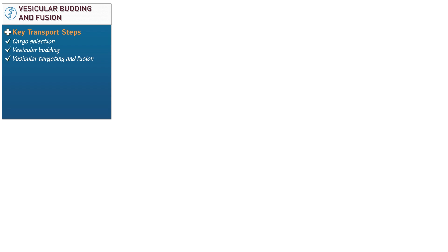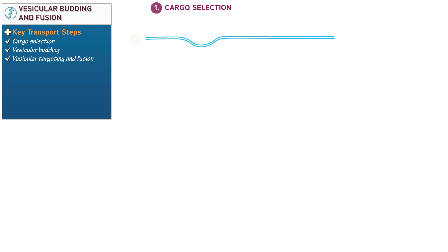We'll illustrate the specialized proteins and receptors that facilitate these steps. To begin, let's illustrate step 1, cargo selection. First, draw a phospholipid bilayer as two lines bending inwards. Label the bilayer donor membrane, with donor lumen above it and the cytoplasm below it.